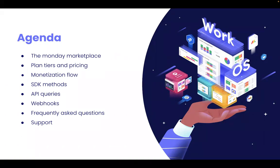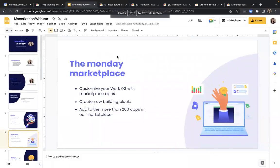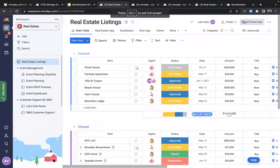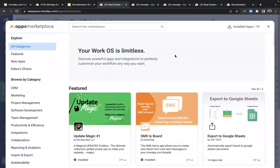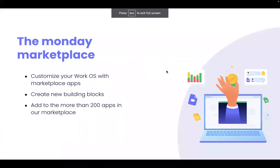Let's go ahead and dive right in. First, let's go over the Monday marketplace. You can access the marketplace by locating the board power-ups button on the top right-hand corner of your Monday account — right here. This is my demo account, for example. In the marketplace, you can find applications that will let our users customize their Monday work OS, making their workspace all the more powerful and connected.